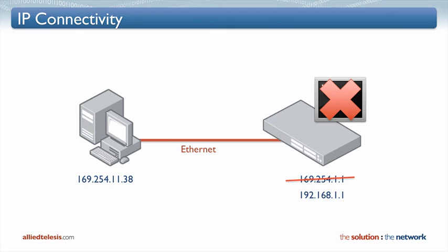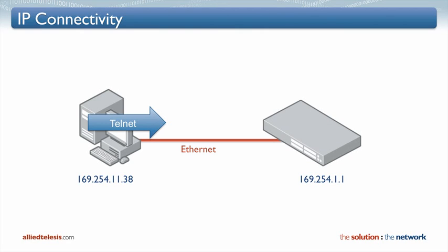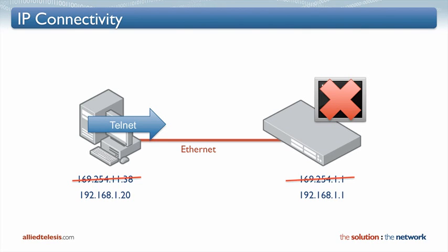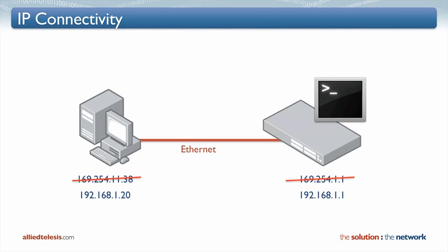So once again the steps are: Telnet to the switch, change its IP address — this disconnects us — change the IP address of the PC to something that's similar, re-establish the Telnet session, and save the configuration on the switch. If we didn't save the configuration then the switch would lose the IP address next time it loses power or reboots.